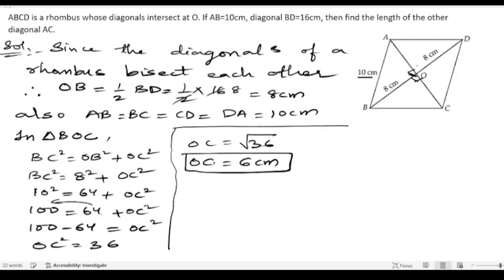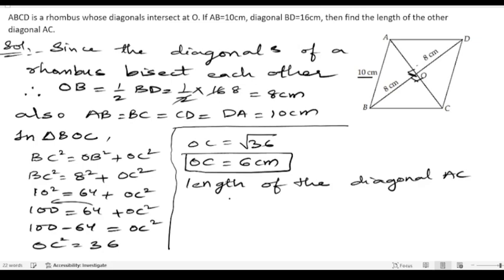Now we have half of the diagonal. The full length of the diagonal will be double this half length. The length of diagonal AC equals 2 times OC, so 2 times 6 equals 12 centimeters. Hence, the length of the other diagonal AC is 12 centimeters.